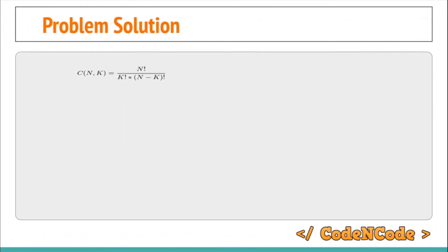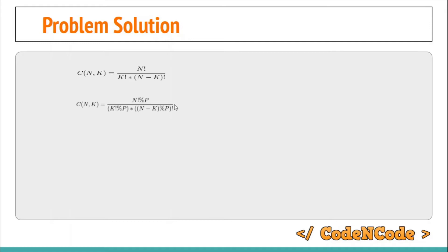We must know that n choose k equals n factorial divided by k factorial into n minus k factorial. Since we are working with modulo p, which is 10^9 + 7, we can rewrite the formula: n choose k modulo p equals n factorial modulo p, divided by k factorial modulo p into n minus k factorial modulo p. Since we are working in a modulo system, we can convert the formula this way and calculate nCk modulo p.